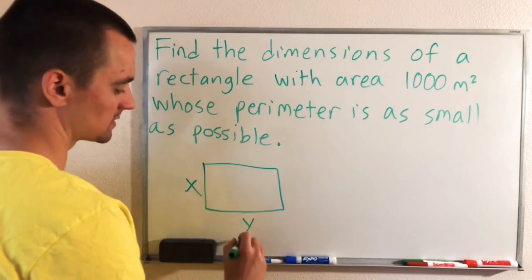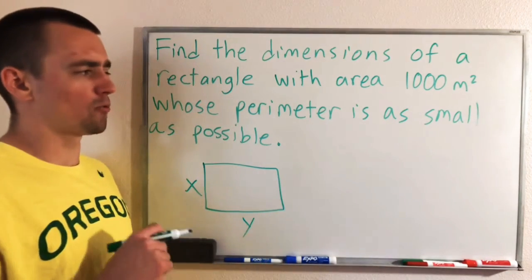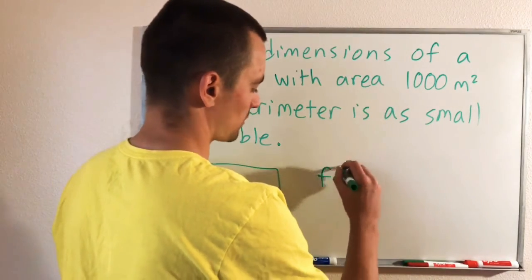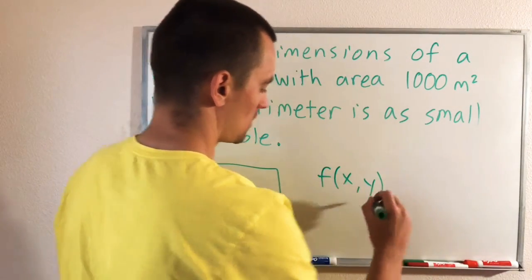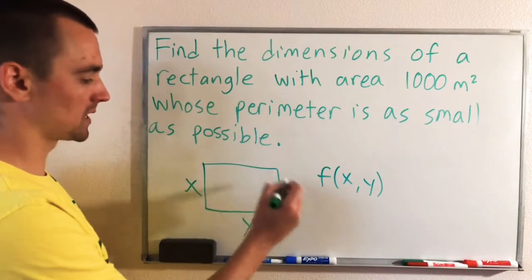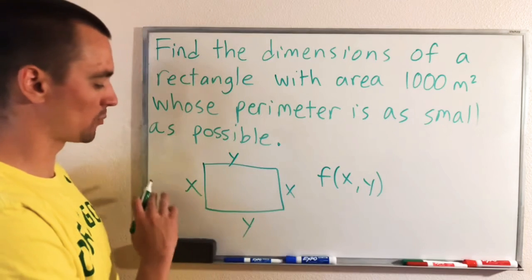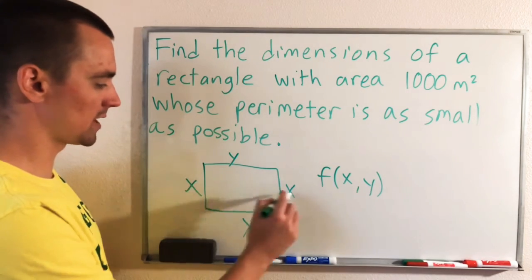So let's think about some rectangle. We'll just say this side is X and this side is Y. If we want the perimeter to be as small as possible, the perimeter is represented by all four of the sides added up, right? If we have a rectangle, we know that opposite sides have the same length.